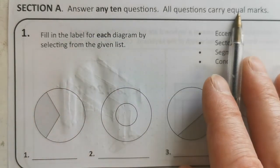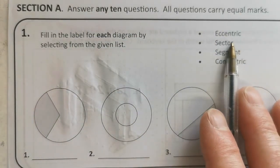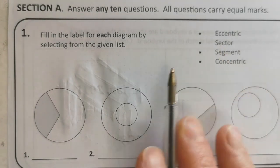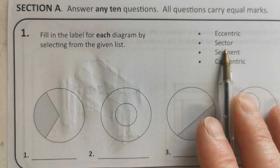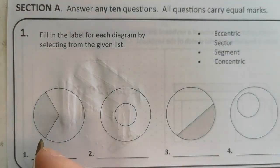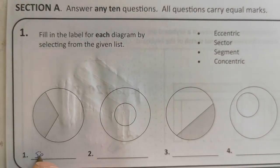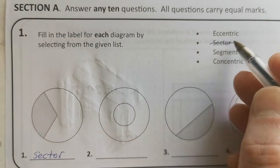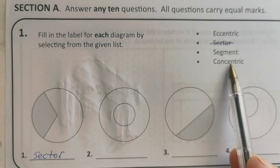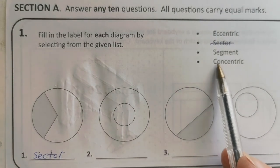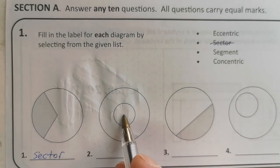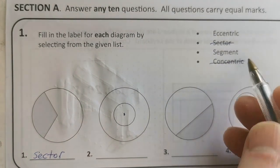Question one asks to fill in the labels. That comes up a lot — that's the sector. And concentric means coincident centers, so the same centers. These two circles have the same centers, so they're concentric.